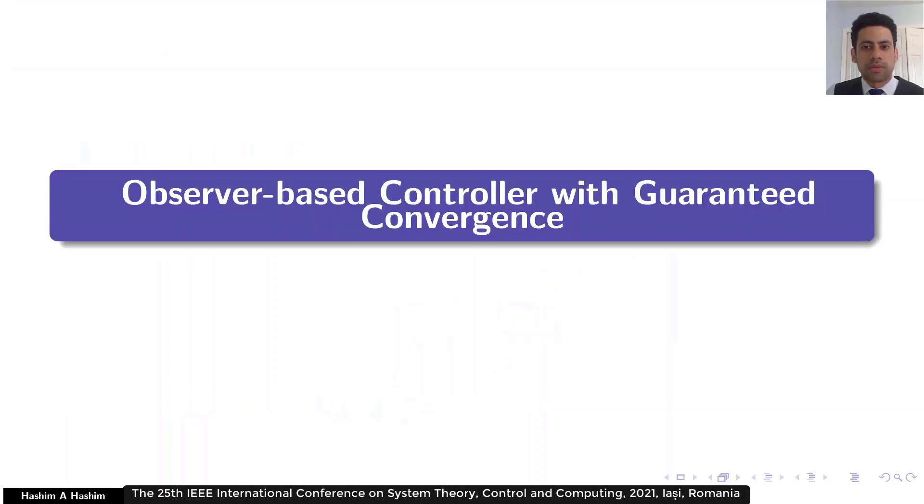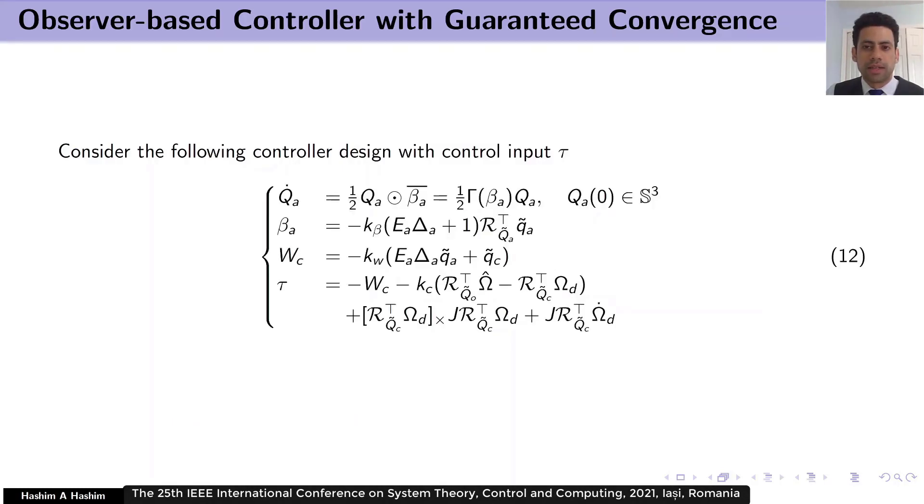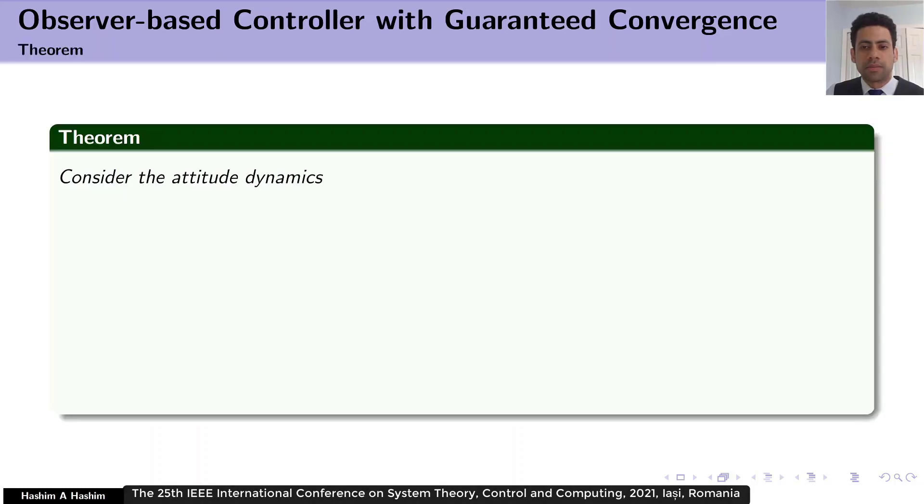Now, let's go to the observer-based controller with guaranteed conversions. Consider the following control design. Now, let us discuss the following theorem. Keeping in mind the true attitude dynamics. Let us suppose that assumption 1 holds true. This way, n is greater than or equal to 2. Hence, the following components are globally bounded.